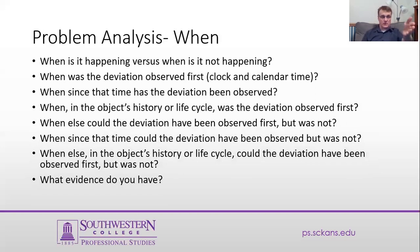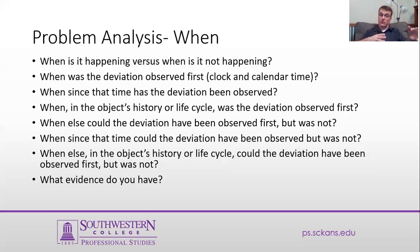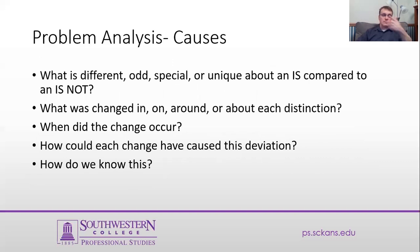When does this happen? We go through the same thing: when is it happening, when is it not happening? When was the deviation observed the first time? When, since that time, has the deviation been observed? When in the object's history or life cycle was the deviation observed first? After you get through this cycle of questions, test your assumptions — what evidence do you have that proves this to be the case?